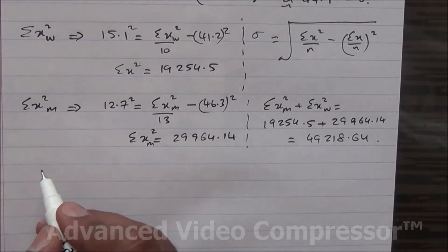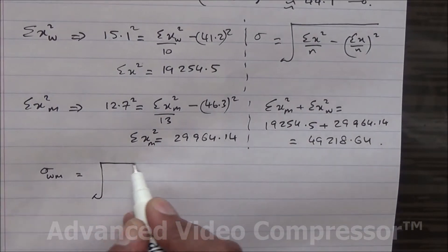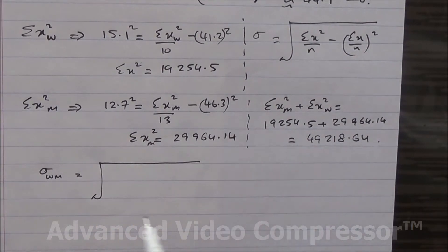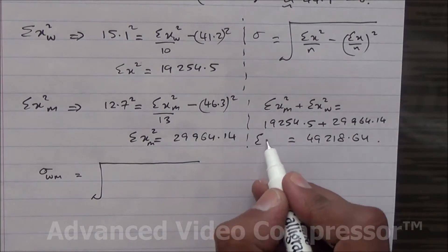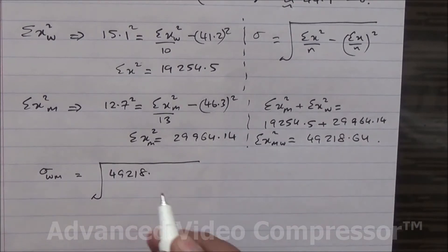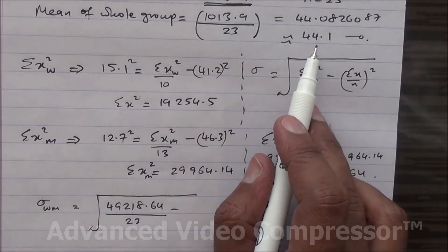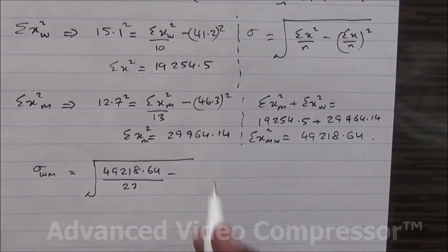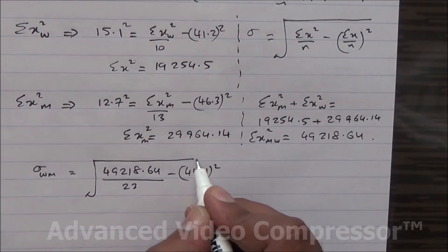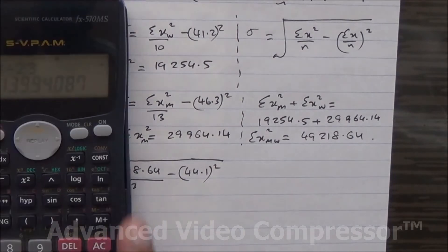To calculate the standard deviation of the whole group, we take the square root of: summation of x squared for men and women — 49,218.64 — divided by the total number of people, 23, minus the mean of the whole group (44.1) squared. So we divide by 23, then subtract 44.1 squared.